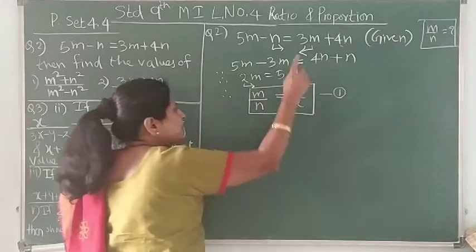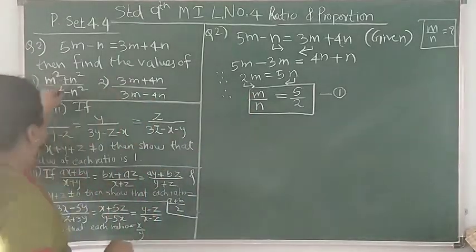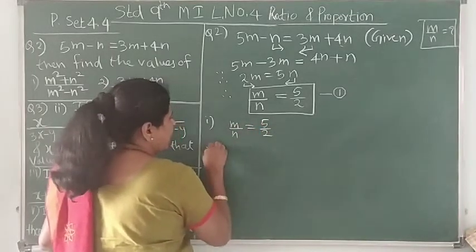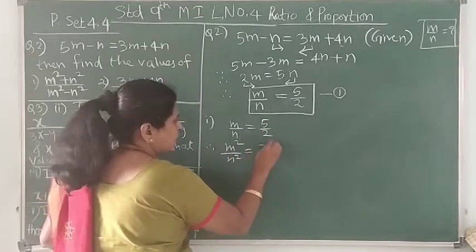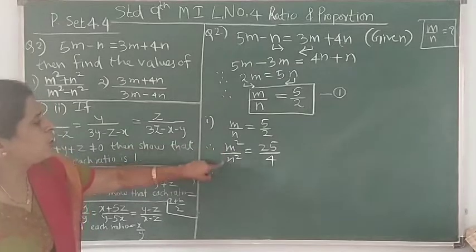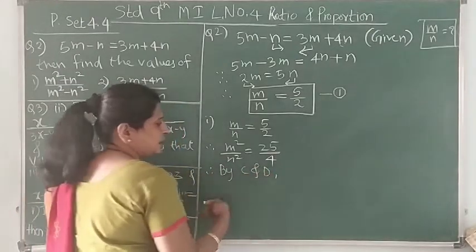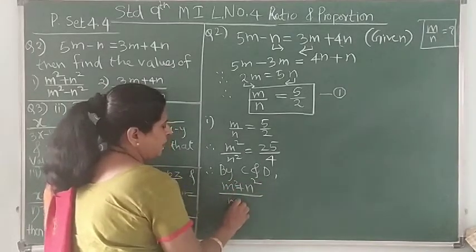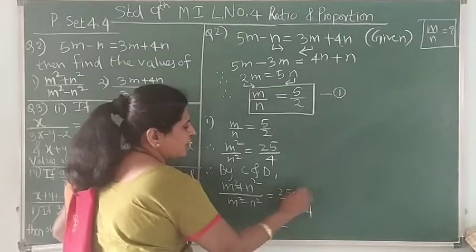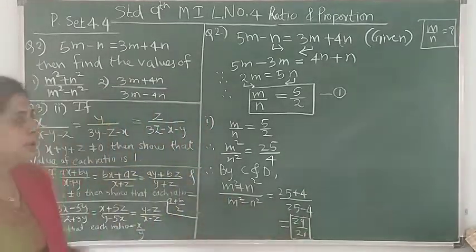So from 2m = 5n, we have got the ratio m upon n is equal to 5 upon 2. This is statement number 1. Once we have found this value, we can find the required expressions as we did in practice set 4.3. Since we want m² and n², we square both sides: m² upon n² is 25 upon 4. Now we want addition and subtraction of numerator and denominator, so by componendo and dividendo: m² plus n² upon m² minus n² equals 25 plus 4 upon 25 minus 4, which gives us 29 upon 21.